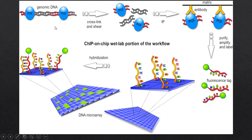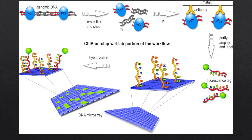Here is a visual walkthrough: we start with genomic DNA and a protein of interest. We allow cross-linkage — the protein of interest binds to a specific site, which is the transcription factor binding site. Then we shear the genome, producing double-stranded DNA segments with the protein of interest attached. From this mixture, we capture only the complex containing the protein of interest using antibodies — this is the immunoprecipitation step.